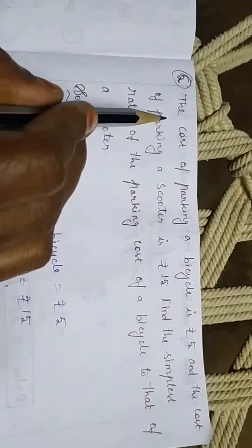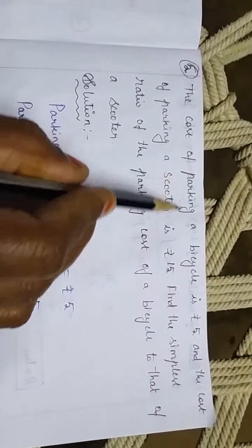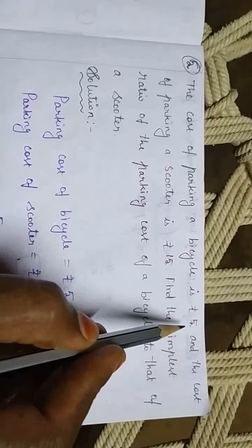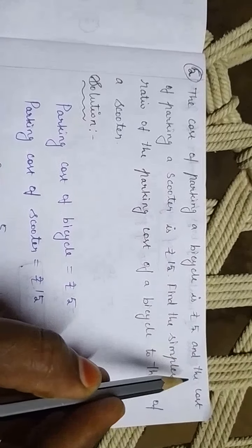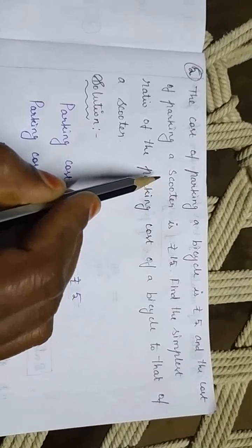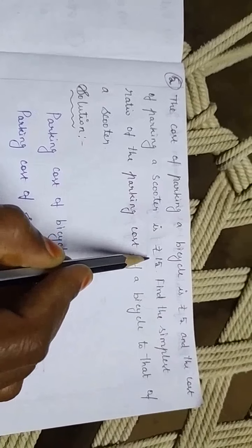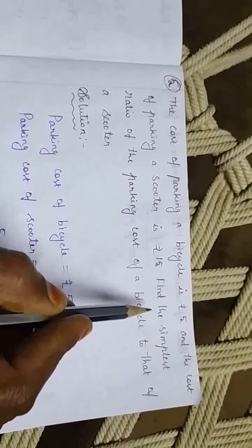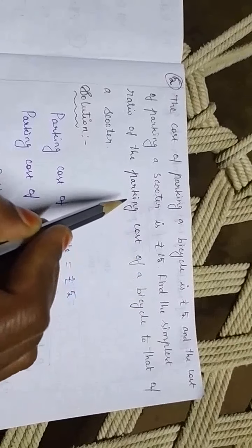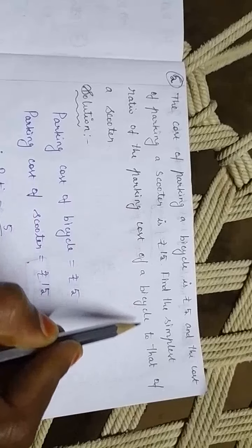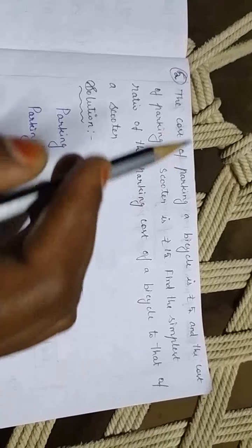Next we will see the 5th sum. The cost of parking a bicycle is Rs. 5 and the cost of parking a scooter is Rs. 15. Find the simplest ratio of the parking cost of a bicycle to that of a scooter.